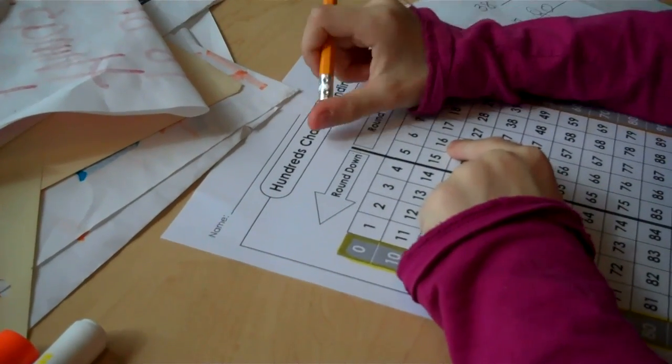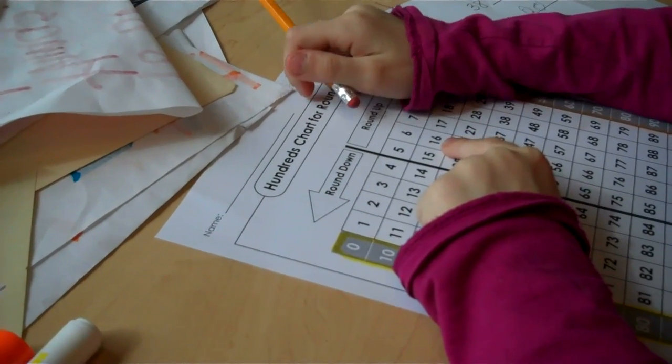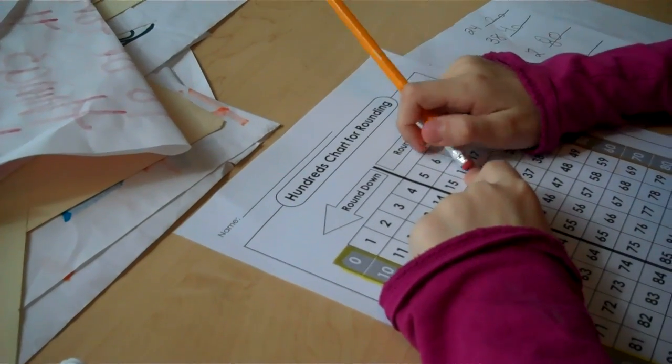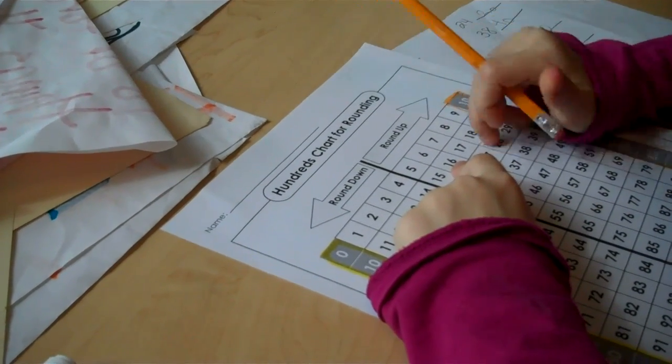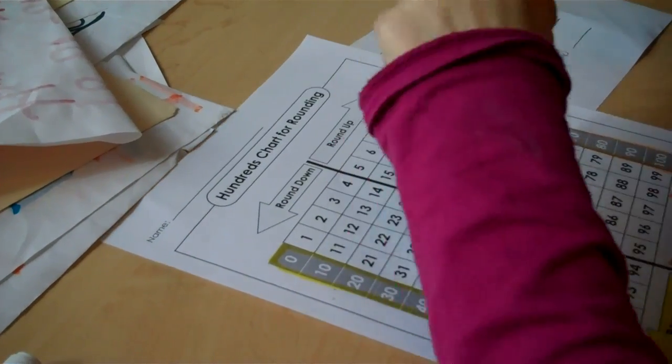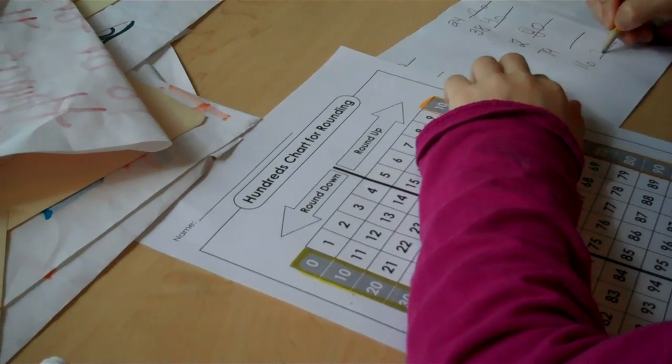Yes. Okay. Which way does my arrow tell me to round to? Seven hundred. Or, what's the last one? Which way are we going to round to? Up, up, up. So what does sixteen round to? Twenty. Twenty. Okay. Good.